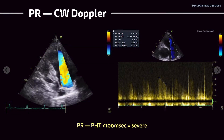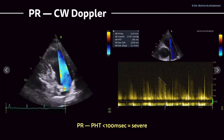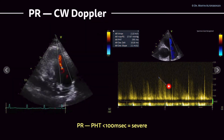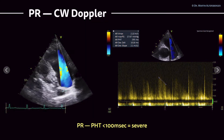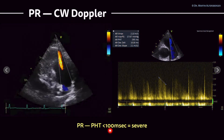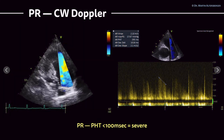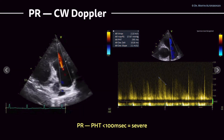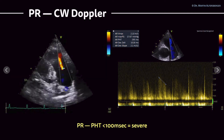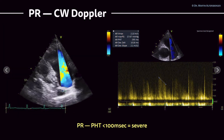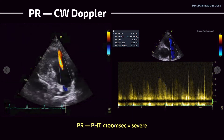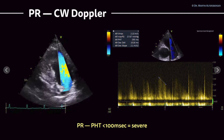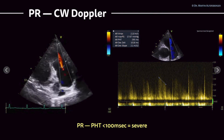Another measurement we can perform is grading pulmonic regurgitation. With pulmonary regurgitation, we can measure the pressure half time — it's the same as with aortic regurgitation. You measure the downslope of the curve, and if this measurement is below 100 milliseconds, it's severe regurgitation. In this case, it's approximately 300 milliseconds, so that's definitely not severe pulmonary regurgitation, which we can also already see in the color Doppler image. The limitation is that this signal is sometimes very hard to get. If you have a truly relevant regurgitation, it's definitely important to perform this measurement, but it will be way easier compared to simply mild regurgitations.